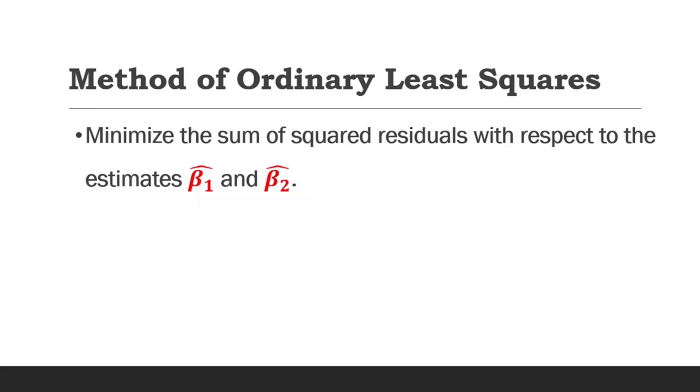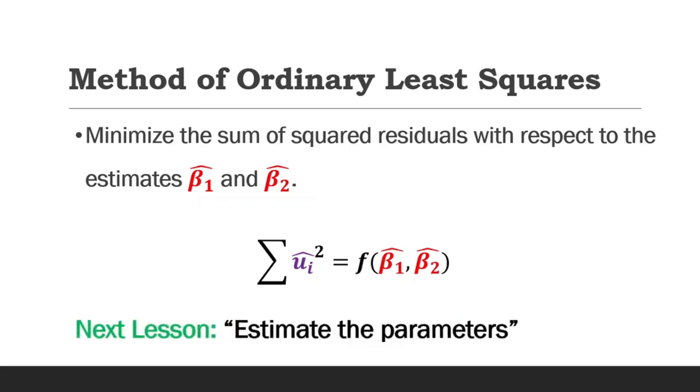Thus, the sum of squared residuals become a function of beta 1 hat and beta 2 hat. This is where we apply a method of differential calculus known as differentiation. We will therefore look at how to estimate these parameters in the next lesson.